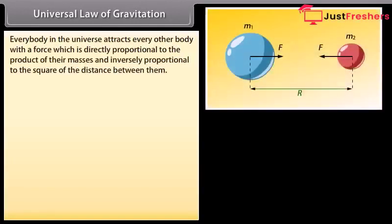Universal law of gravitation: Every body in the universe attracts every other body with a force which is directly proportional to the product of their masses and inversely proportional to the square of the distance between them.